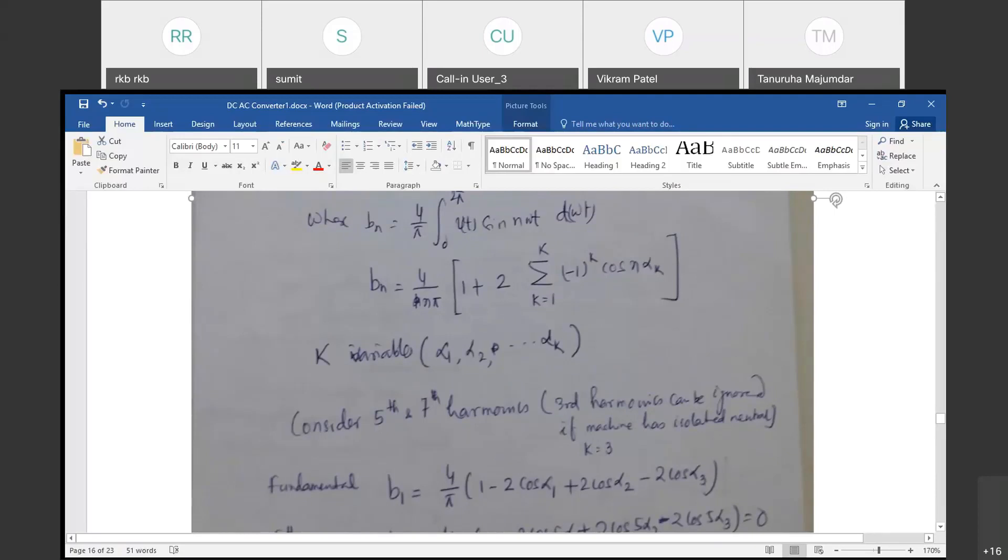This is what, consider fifth and seventh harmonic. Third harmonic can be ignored if the machine has isolated neutral. Because when we have an isolated neutral in the machine, for example, an induction motor is delta connected or a floating neutral. Neutral is not available.